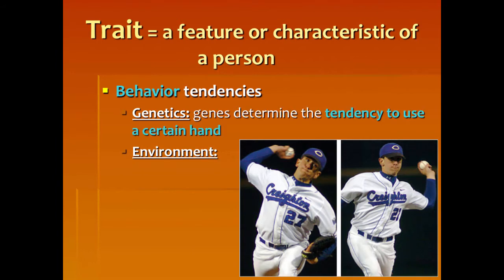Let's talk about behavioral tendencies. Genetics is when genes determine your tendency to use a certain hand — are you right-handed, left-handed, or ambidextrous? The environment can lead you to learn to use the opposite hand. Since I am left-handed, when I was in school they were trying to make me do a lot of things right — I cut with my right hand, I bat right-handed, I bowl right-handed. I do everything with my right hand except write.